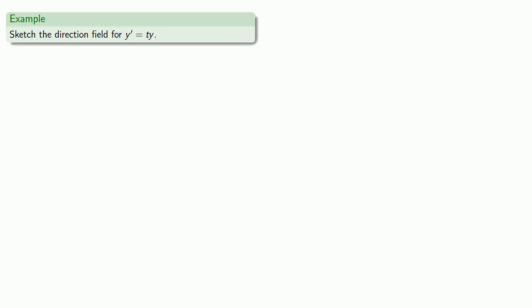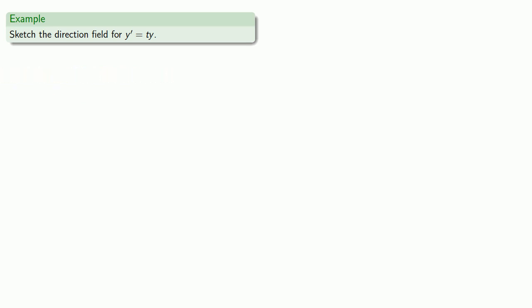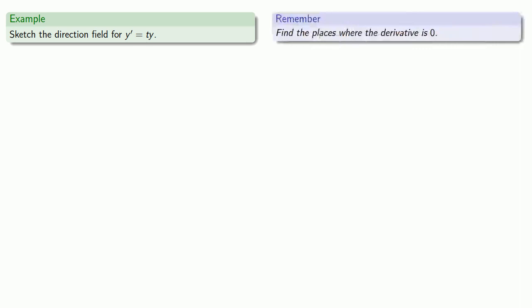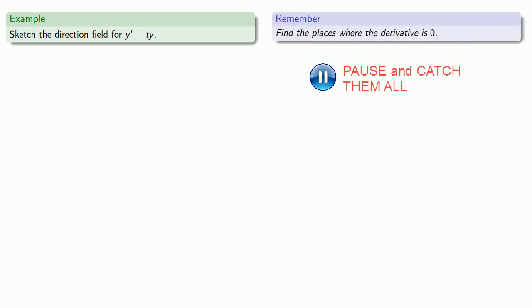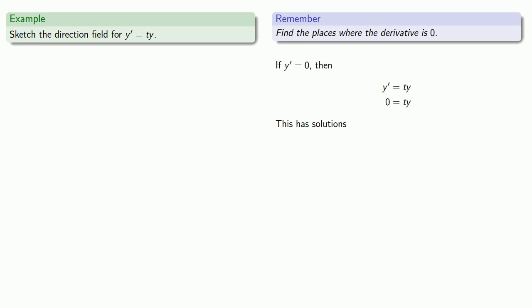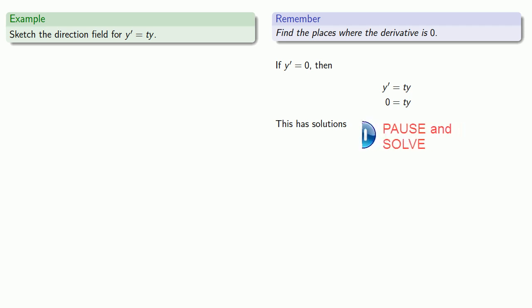Let's consider the differential equation y' = ty. First, we want to find the places where the derivative is 0. If y' is equal to 0, our differential equation becomes 0 = ty, and the solutions to this are t = 0 and y = 0.